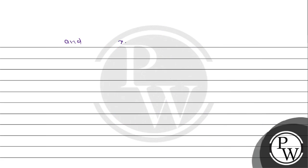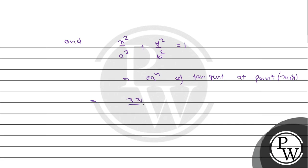The other curve is the ellipse: x square upon a square plus y square upon b square equals 1. The equation of tangent to the ellipse at point x1, y1 is: x into x1 upon a square plus y into y1 upon b square equals 1. This is equation number 2.